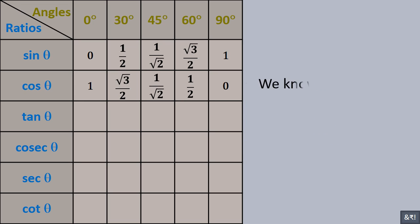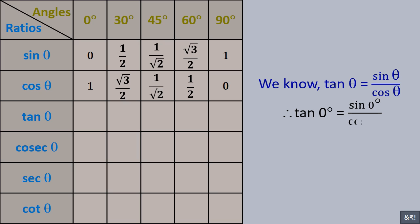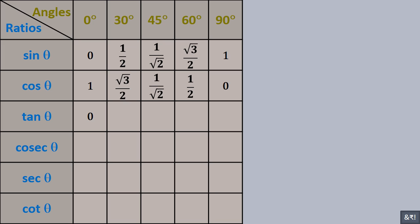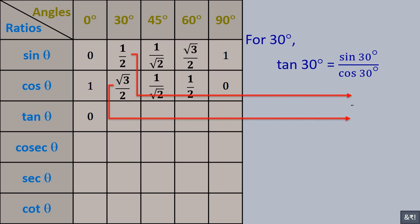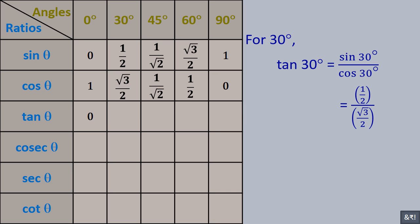We know tan theta is equal to sine theta divided by cos theta. Therefore, tan 0° = sin 0° / cos 0° = 0/1 = 0. For 30 degree, tan 30° = sin 30° / cos 30° = (1/2) / (√3/2) = (1/2) × (2/√3). The 2s cancel, giving 1/√3.